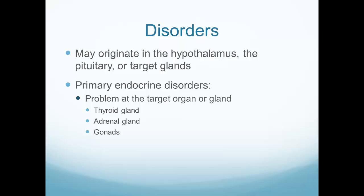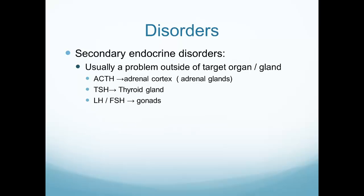We can have a secondary endocrine disorder - a problem that occurs outside of the target organ or gland. For example, ACTH is produced by the adrenal glands outside of the kidney. If we have too much ACTH produced, this doesn't have to come from the kidney - ACTH could be produced by other tissues, causing the patient to have a problem that looks like an adrenal problem. The same applies to TSH, LH, and FSH.